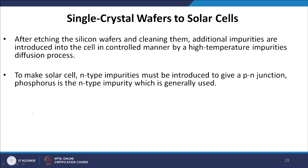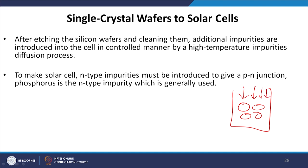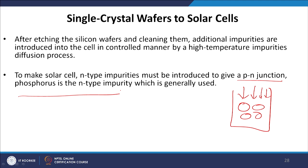Now with single crystal wafers in hand, the next step is to make a silicon solar cell. After etching and cleaning the silicon wafers, additional impurities are introduced in a controlled manner at high temperature through a diffusion process. The silicon wafer is placed in a cylindrical or rectangular chamber at very high temperature and the required impurity is diffused in to make it either p-doped or n-doped. To make a solar cell, n-type impurities must be introduced to create a p-n junction.